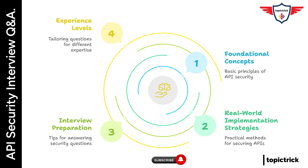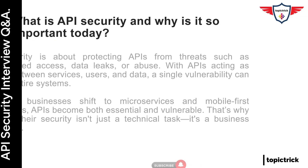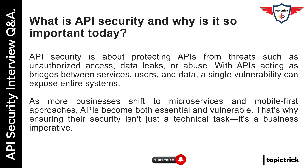Let's start with something basic but critical. What is API security, and why is it so important today? API security is about protecting APIs from threats such as unauthorized access, data leaks, or abuse. With APIs acting as bridges between services, users, and data, a single vulnerability can expose entire systems. As more businesses shift to microservices and mobile-first approaches, APIs become both essential and vulnerable. That's why ensuring their security isn't just a technical task — it's a business imperative.